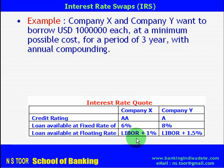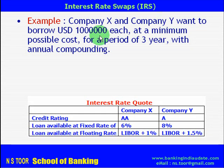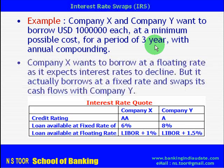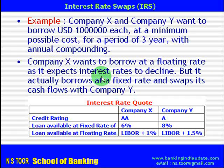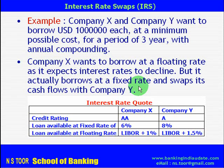Let us explain this concept by way of an example. We have Company X and Company Y and they want to borrow US$10 billion each at a minimum possible cost for a period of 3 years with annual compounding. As far as Company X is concerned, they want to borrow at a floating rate because they expect interest rates to decline in future. But it actually borrows at fixed rate and swaps it with the cash flow of Company Y.